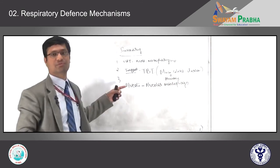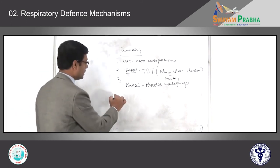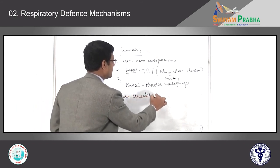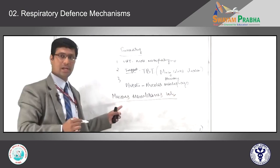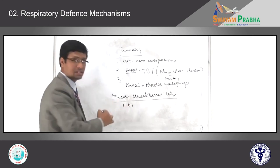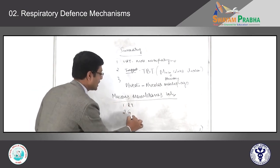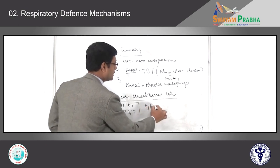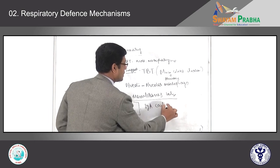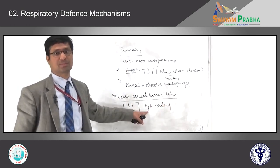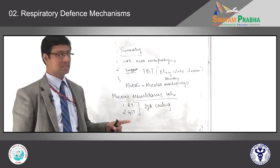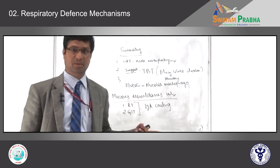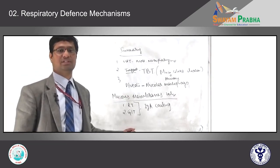These three important defense mechanisms are what you should know. Along with that, all mucus membranes in the body — most importantly the respiratory tract and gastrointestinal tract — also have IgA immunoglobulin coating on the surface, which is also one of the most important defense mechanisms. We will stop today's class here; when you have impairment in these mechanisms, you will get pneumonia — which we call inflammation of the lung parenchyma — and I will be talking about that in the Respiratory System Part 3.